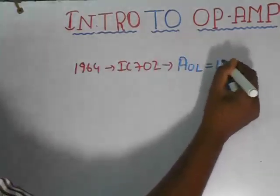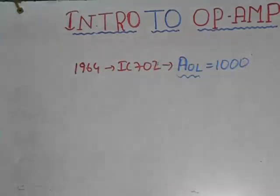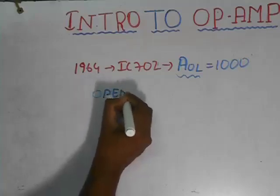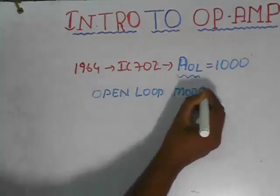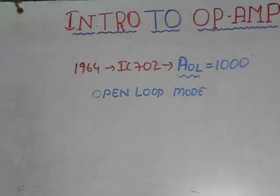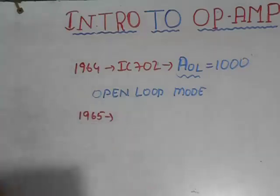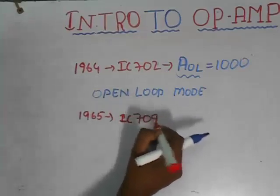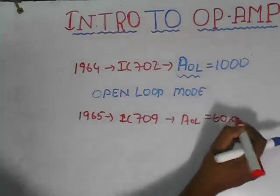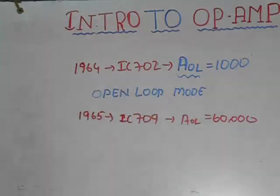It was the greatest invention at its time. What is AOL? If you take an op-amp without considering the external feedback circuit, the op-amp is said to be in open-loop mode, and the gain of the op-amp in open-loop mode is called open-loop gain. In the next year, 1965, the same Bob Widlar came up with another IC package — IC 709 — whose AOL is almost 60,000. This is amazing! But the major disadvantage of IC 709 is it lacks short-circuit protection.